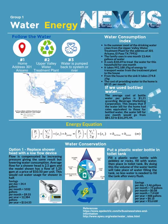Our water distribution system consists of a three-phase system. First, it starts at the water treatment plant, then it is pumped to a storage container, and then it is pulled by gravity down into the residential area.